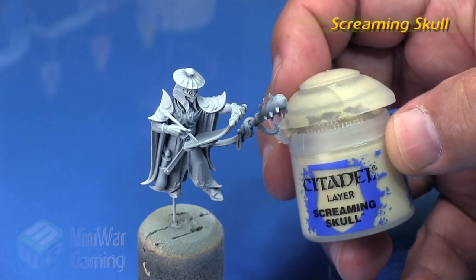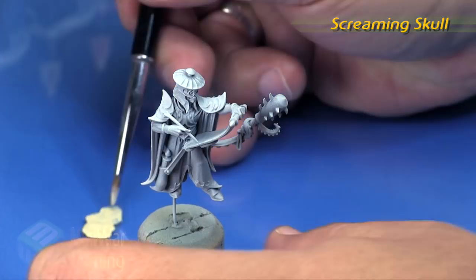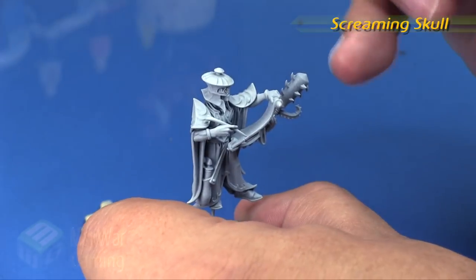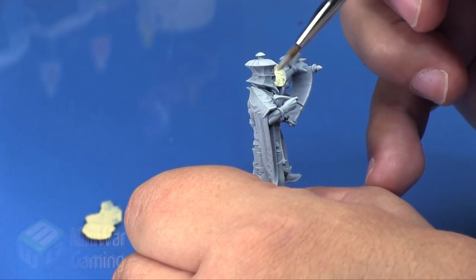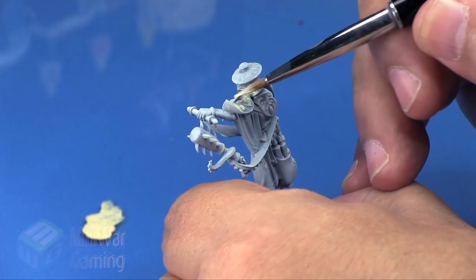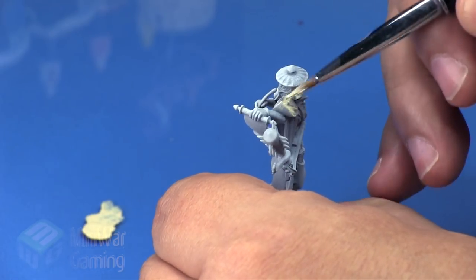We're going to base coat the armor as what we're going to be working on this video. We're going to be base coating it in Screaming Skull. Very lightly, just with the dampness of the brush to thin the color out ever so slightly.